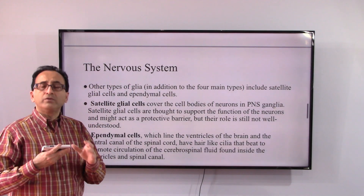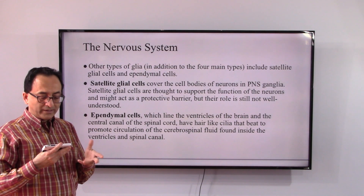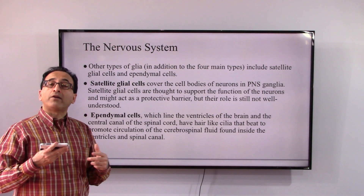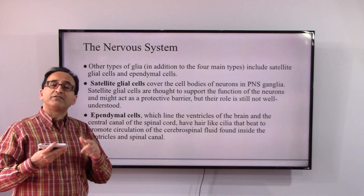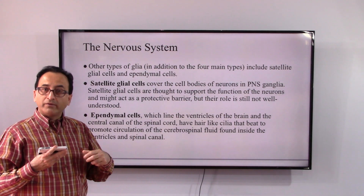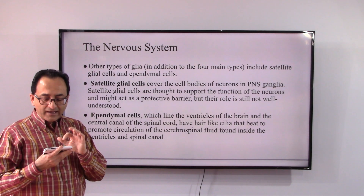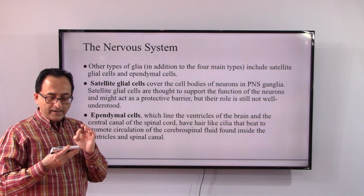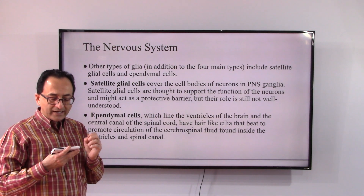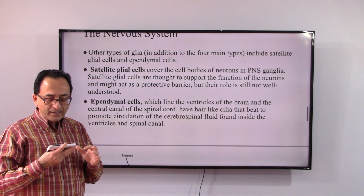We also have satellite cells, whose role is still not well understood — which is why I've mentioned that we have yet to fully learn how our nervous system works. Satellite cells require further investigation, but they appear to act as a protective barrier.